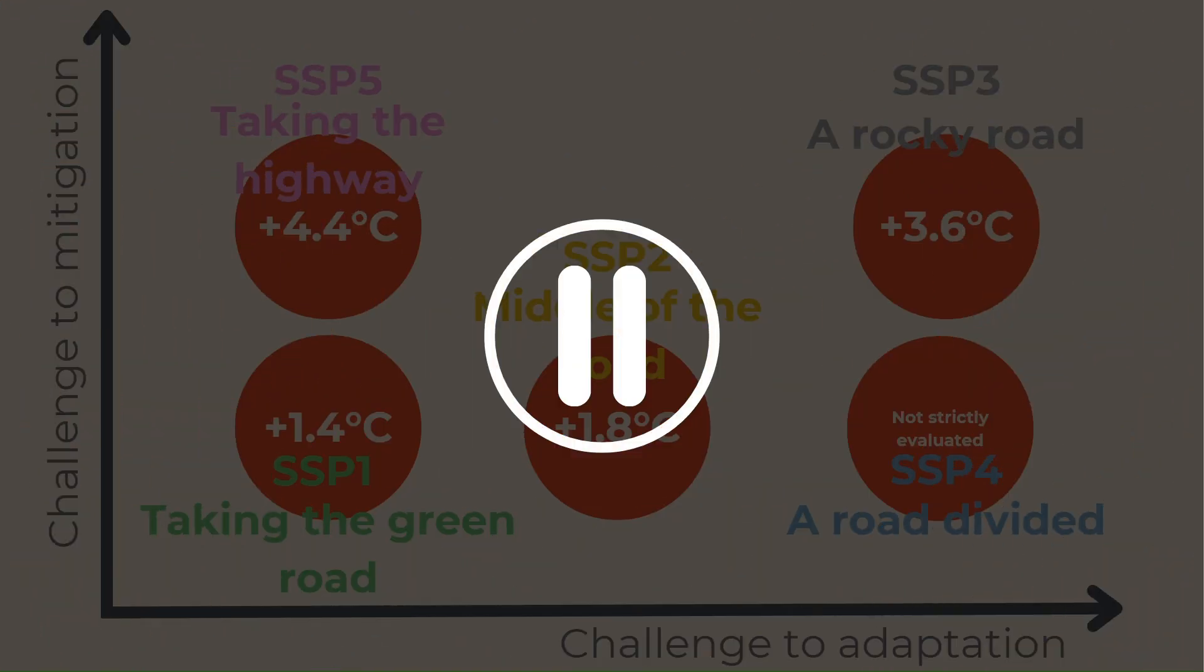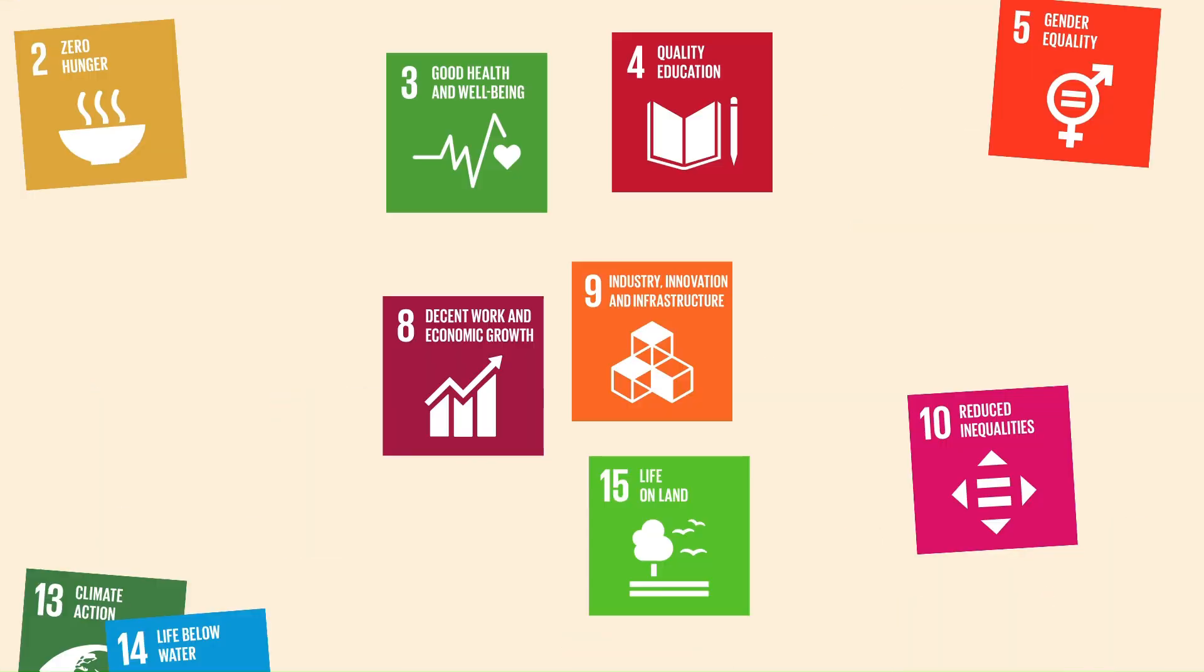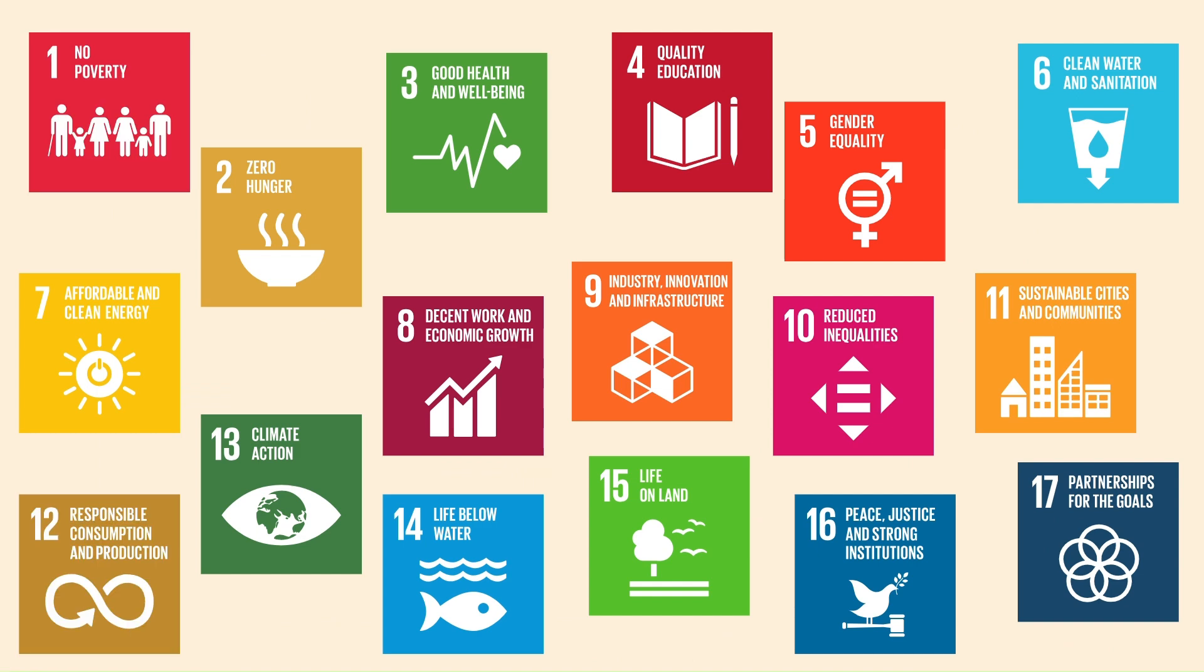Now remember that we must try to limit this warming as much as possible. The SSPs show us that this limitation is consistent with the pursuit of well-being, because SSP1 is the scenario that limits the rise in temperature and improves our well-being. It is also the scenario that is consistent with sustainable development goals.